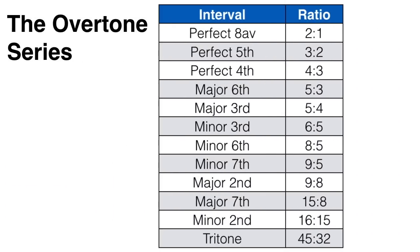As we've seen, all intervals can be expressed as a ratio of two harmonics derived from this harmonic series. You can see them all written out here: a perfect octave is 2 over 1, a perfect fifth is 3 over 2, a perfect fourth is 4 over 3, a major sixth is 5 over 3, a major third is 5 over 4, and so on.